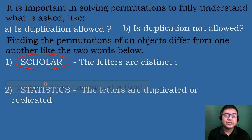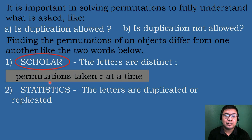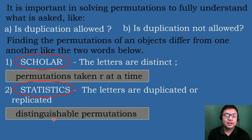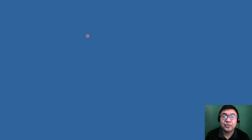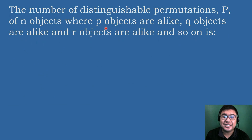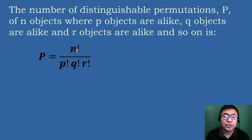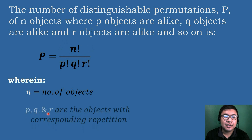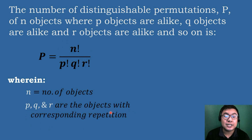The word 'scholar' is an example of permutations of objects taken R at a time, while the word 'statistics' is an example of distinguishable permutations. The formula for distinguishable permutations is: P equals N factorial over P factorial times Q factorial times R factorial, where N is the total number of objects and P, Q, and R are the counts of each group of repeated objects.